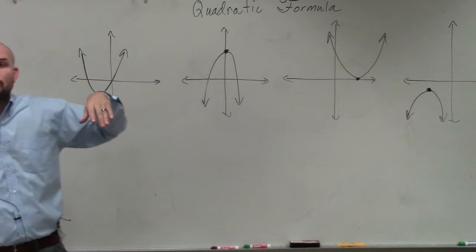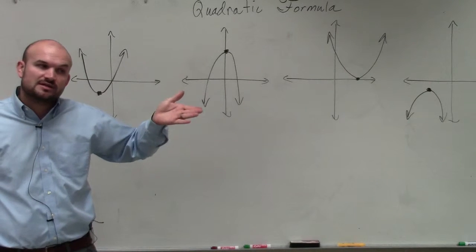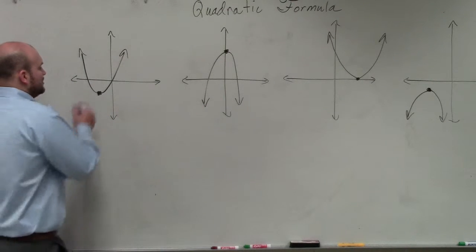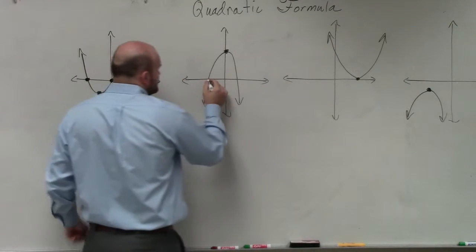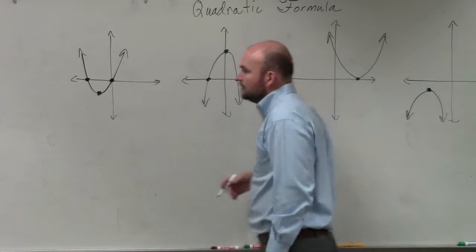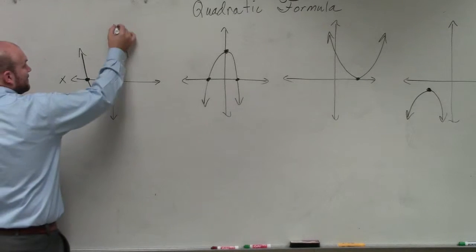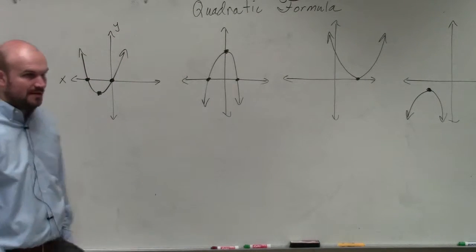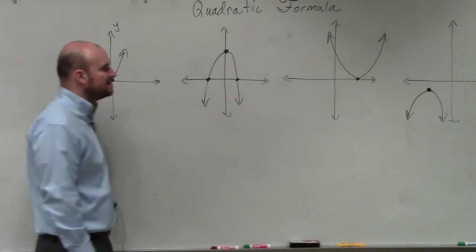Now what we're going to do is we're going to look at two other characteristics, or at least another characteristics of the quadratic. And what I want you guys to look at is the points where the graph crosses the x-intercept. So remember, this is the x-axis. That is the y-axis. And what I want you guys to think about here is something that's very, very important.